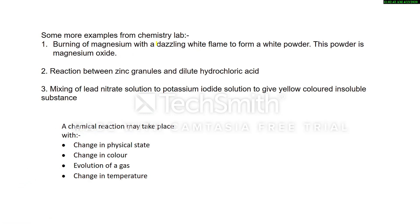We can also see examples from the chemistry lab. One is burning of magnesium with a dazzling white flame to form a white powder, which is magnesium oxide. So we take magnesium, it reacts with oxygen, and forms a new substance — magnesium oxide.